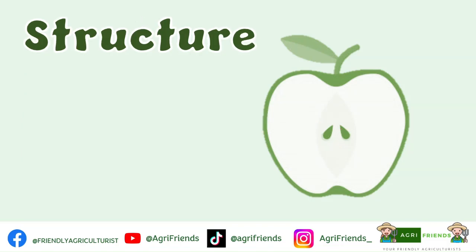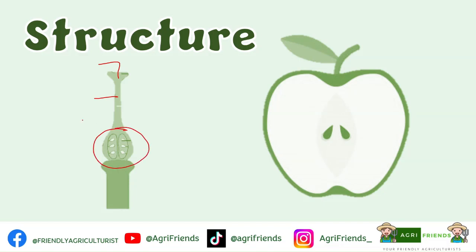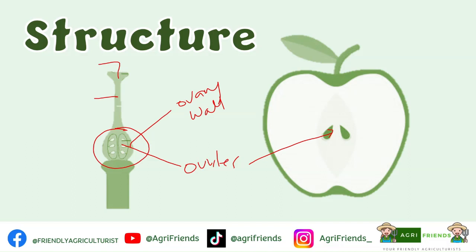For the structure of the fruit, if you can still recall the structure of a carpel, this part is the stigma, this is the style, and this is the ovary. These are the ovules, and this is the ovary wall. The ovules will become the seeds and the ovary wall will become the fleshy part, or what we call the pericarp.